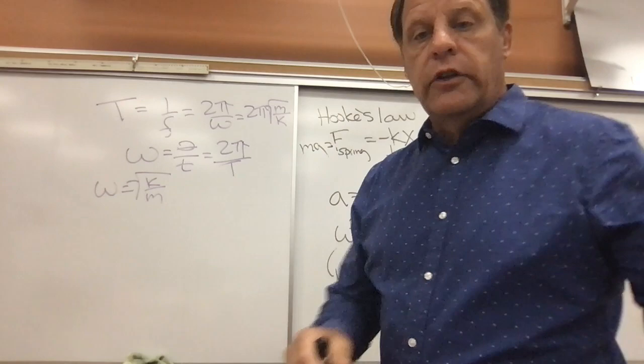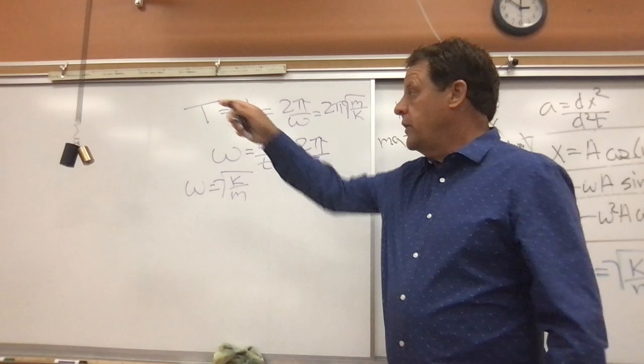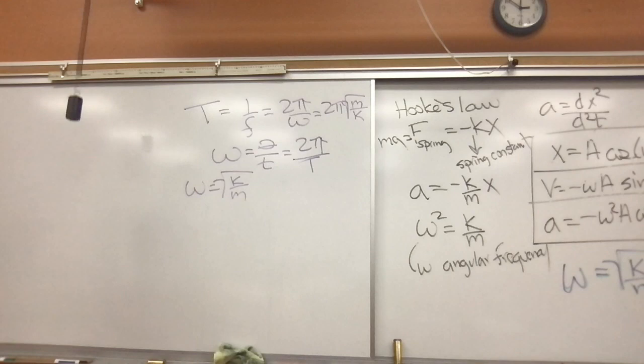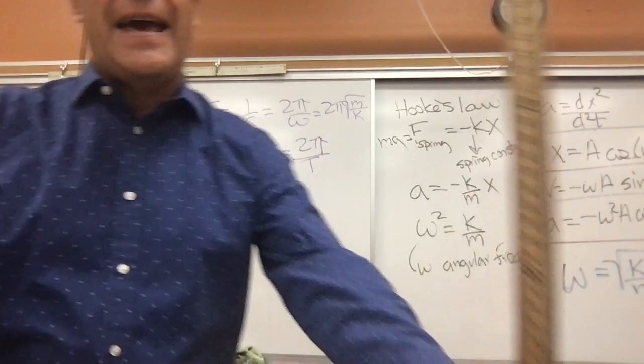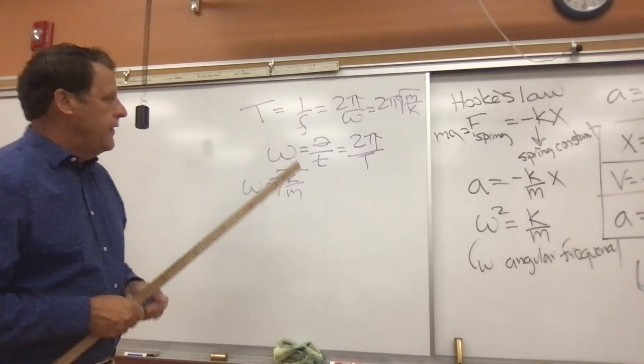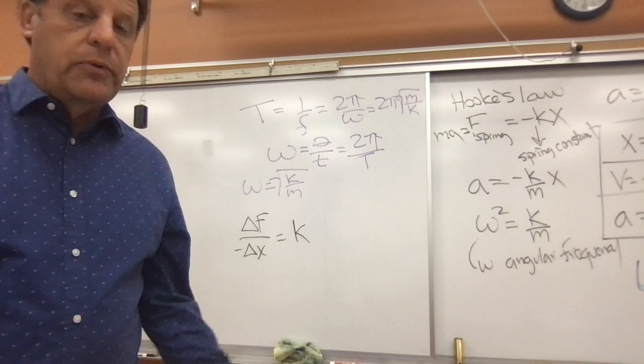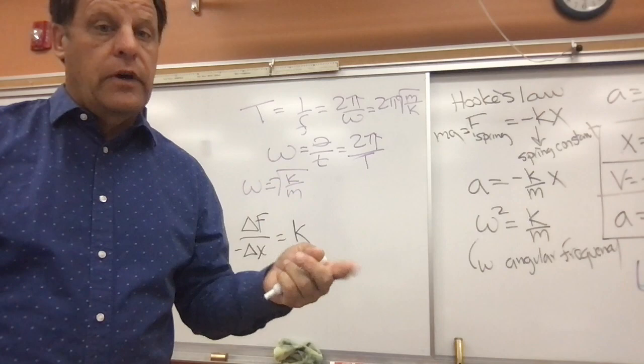Let's go ahead and do a little experiment with this particular spring. In order to establish the spring constant K, we need Hooke's Law — that's the change in force divided by the change in x, which equals K. Technically, that's the negative change in position because the restoring force is in the opposite direction of the change in position.